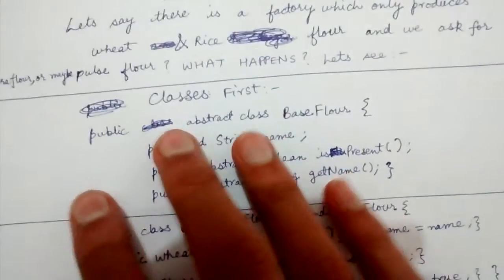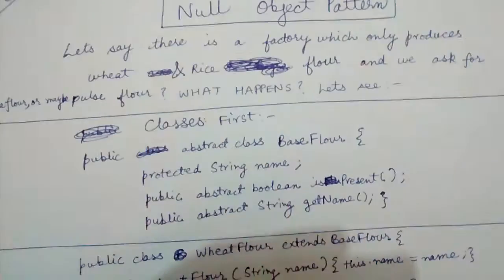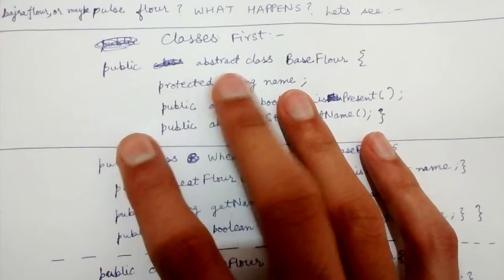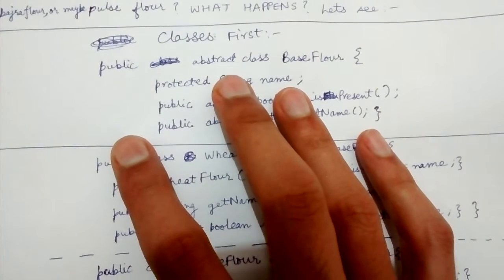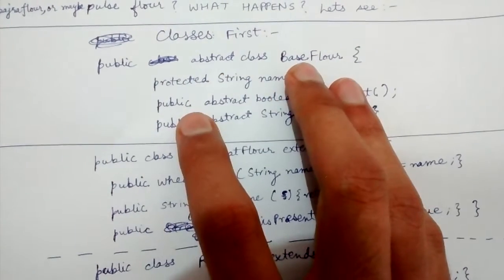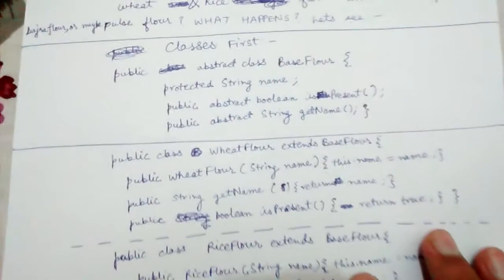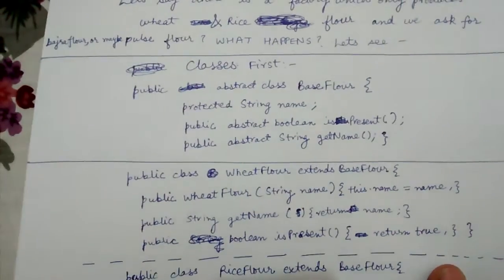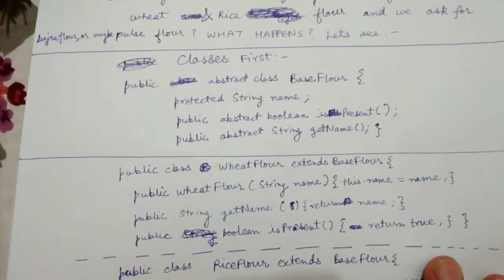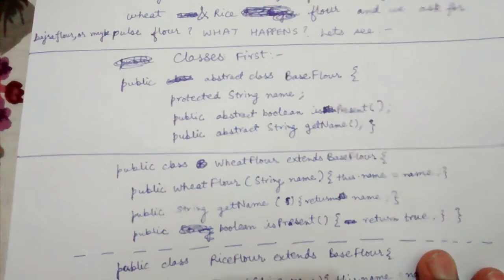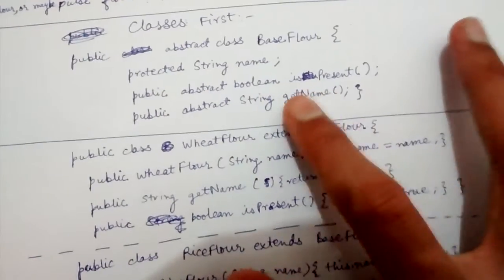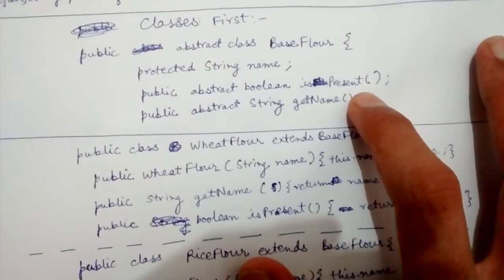Let's look at the classes first. This is an abstract class named BaseFlour. It has a name attribute for the name of the flour, an isPresent method which returns true or false depending on whether the flour is present in the factory, and a getName method which returns the name attribute.